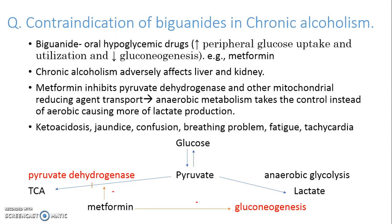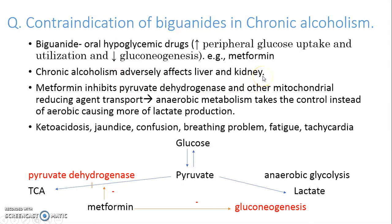With our theoretical knowledge, we know that biguanides are oral hypoglycemic drugs and the mechanism of action through which they act is by increasing peripheral glucose uptake and utilization of glucose. Also, it decreases gluconeogenesis. The examples of biguanides are metformin and phenformin. Also, we know that chronic alcoholism adversely affects our liver as well as kidneys, apart from other organs.